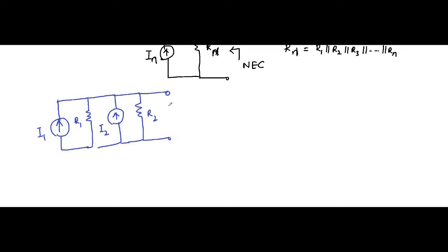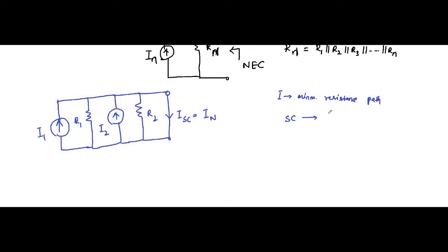We know that in order to find the Norton current, the normal approach is to short circuit the two terminals and then find the current flowing through it — the short-circuited current, which is the Norton current. One important thing associated with electrical circuits is that current always takes the minimum resistance path. Short circuit means resistance is zero; open circuit means infinite resistance. So obviously, all of the current associated with this circuit will flow through this short-circuited path.